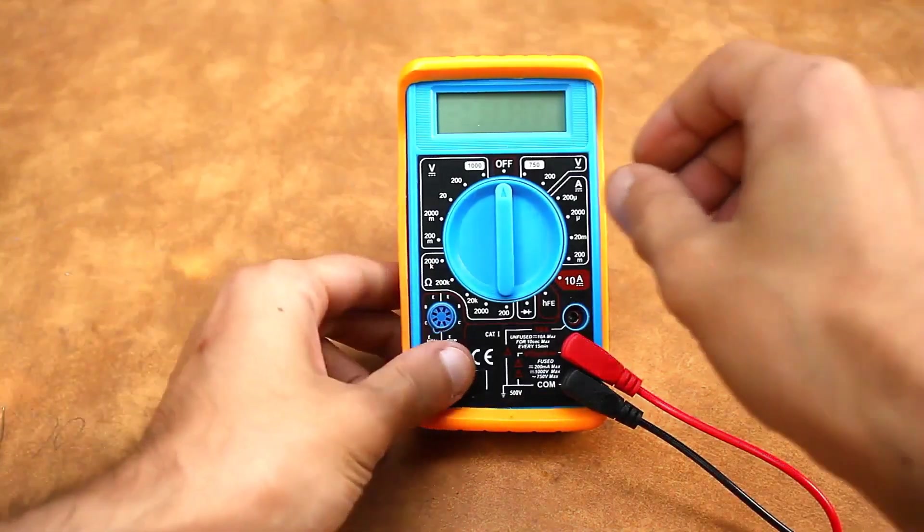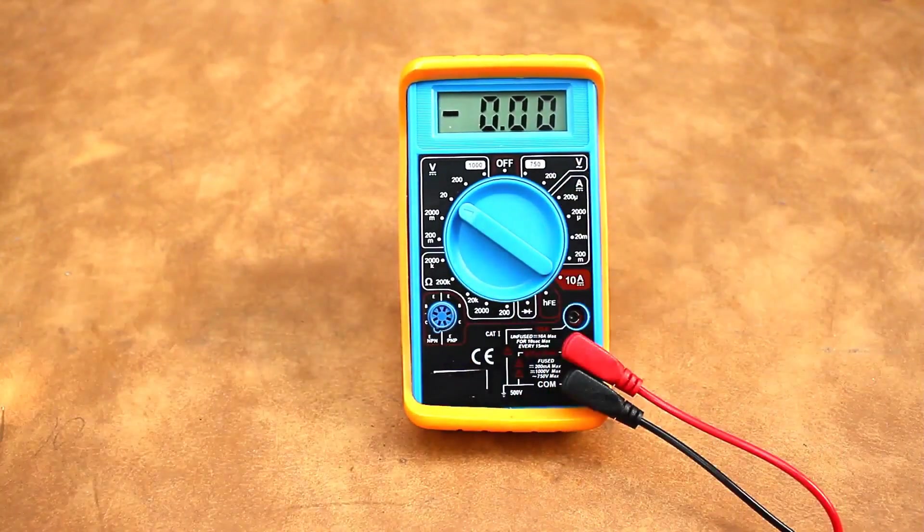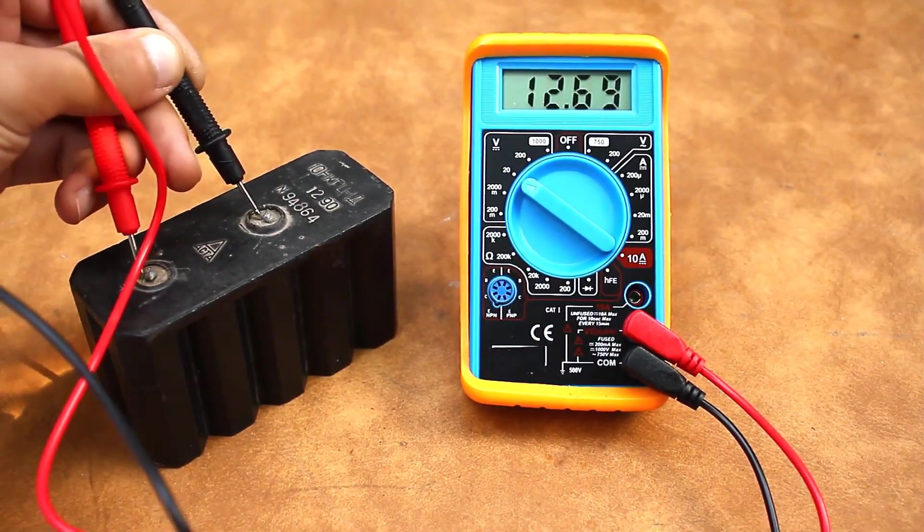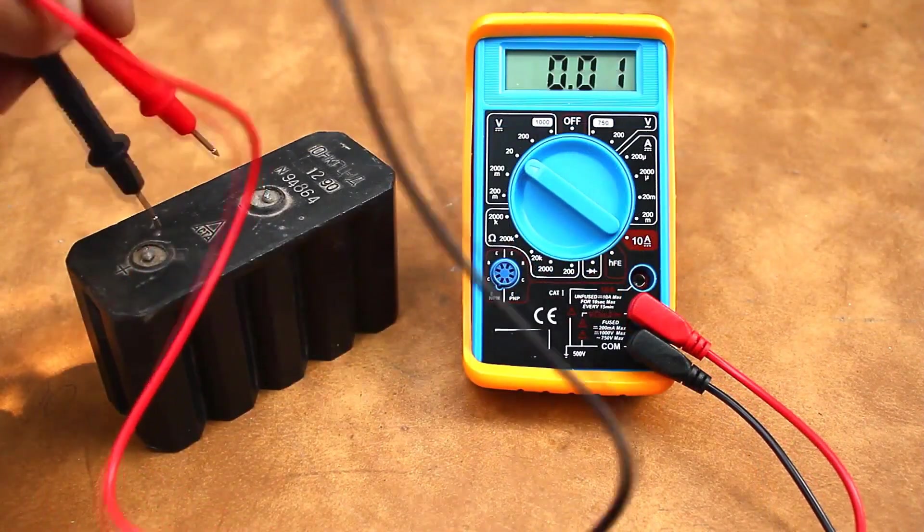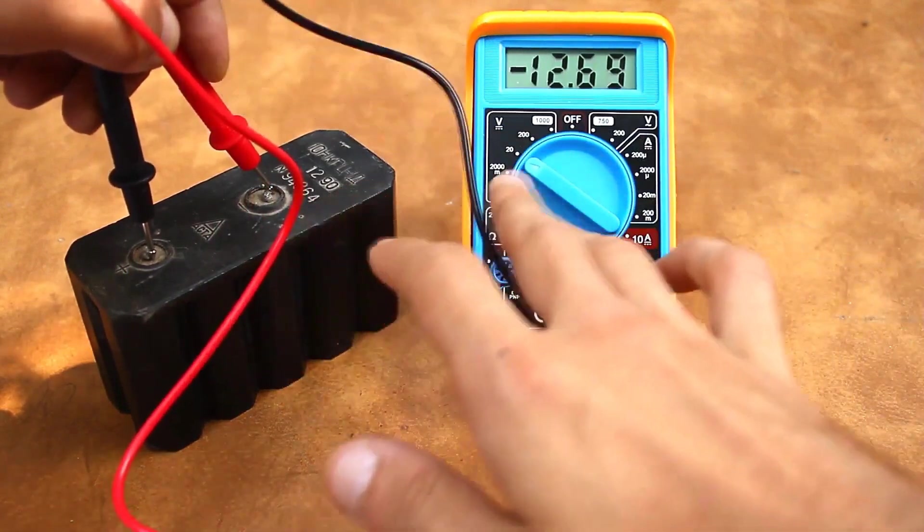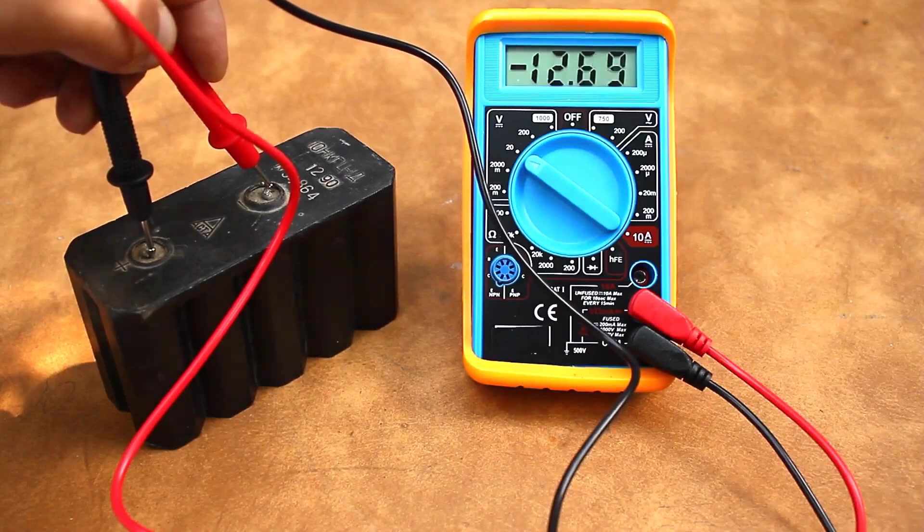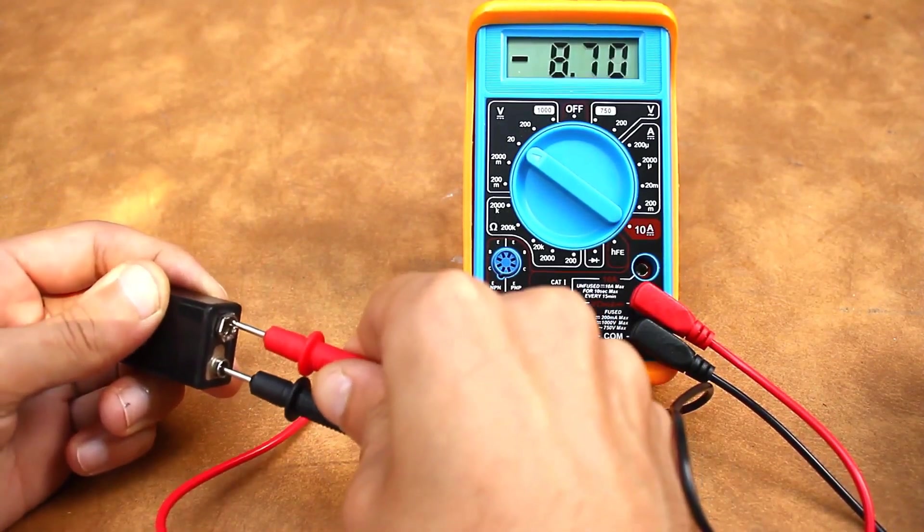When measuring voltage, for example on a battery, the multimeter is set to the appropriate mode. The black probe is connected to the negative terminal of the battery, and the red to the positive. If you mix up the polarity of the probe connections, nothing bad will happen. You'll just see a minus sign on the multimeter display, indicating reverse polarity. This symbol can also help identify the polarity of unknown DC sources.